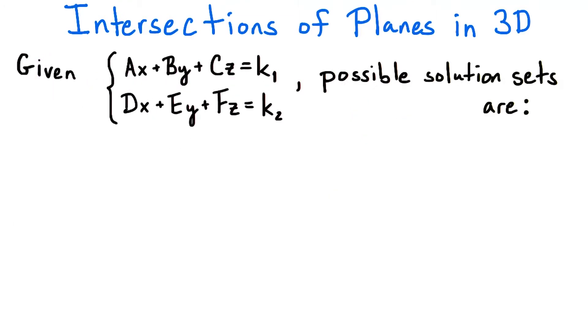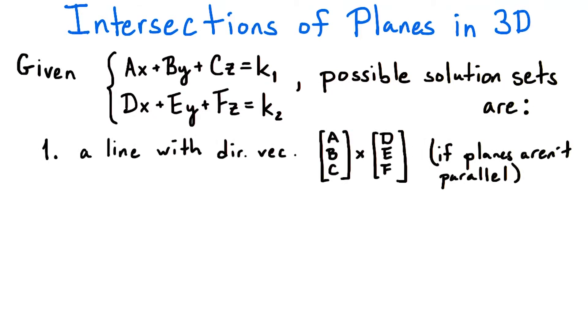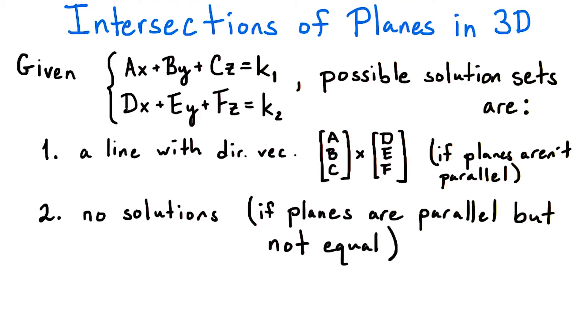So what are the consequences of this? Well, if we have a system of two linear equations in three dimensions, then the set of points satisfying the system could form a line's worth of solutions if the equations define two planes that are not parallel, no solutions if the equations define different parallel planes, or a whole plane's worth of solutions if the two equations define the same plane.